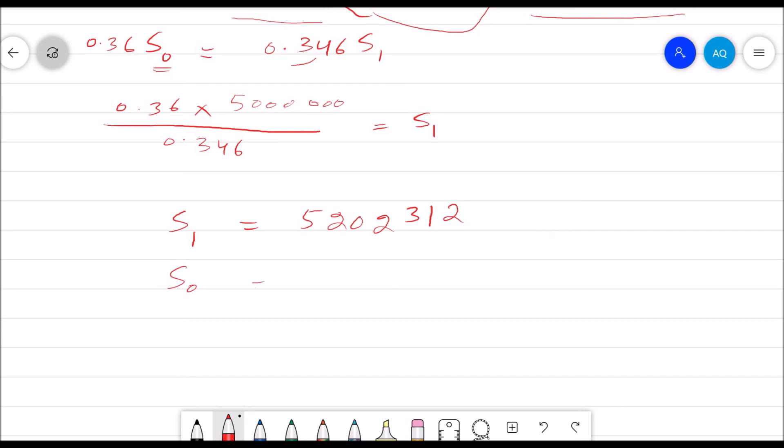While our S₀ was $5,000,000, by subtracting these we will have $202,312. So this is the sales amount we can increase with our existing assets without using any external funds. Thank you.